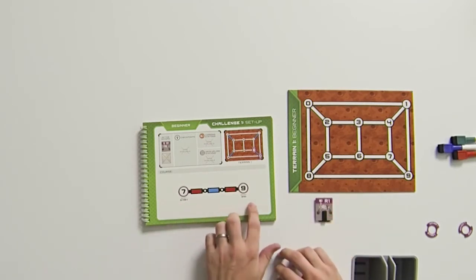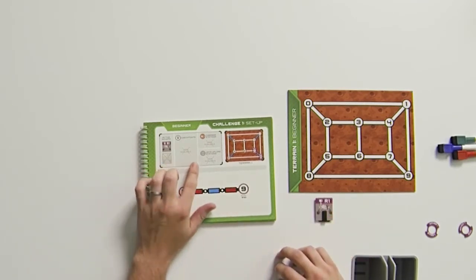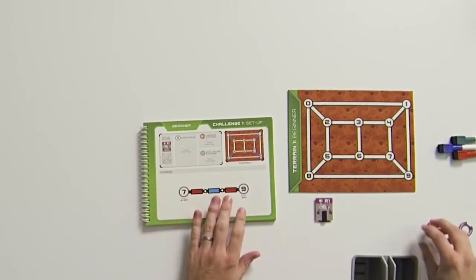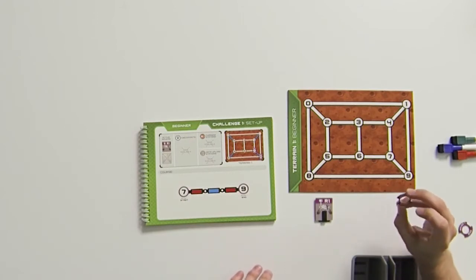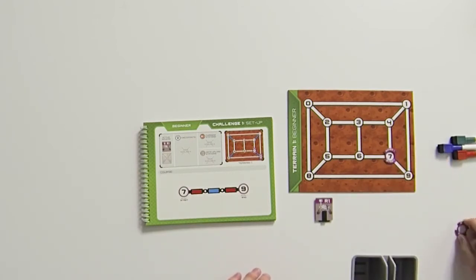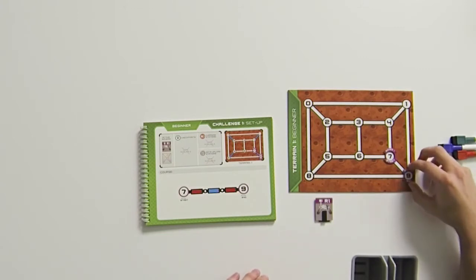We need a start and an end piece, and no charging or data upload stations, as well as no checkpoints. Those will become relevant in more difficult challenges later on. We're going to place our starting token at number 7 on our game board, and our ending token at number 9.